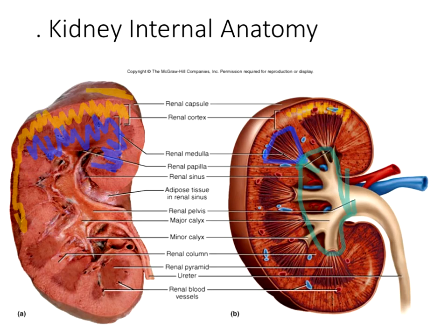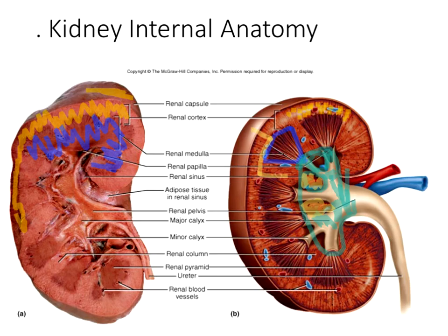Minor calyces sit at one pyramid; majors form where two or more minors come together. The renal sinuses contain a large deposit of fat wrapped around vessels. The renal arteries branch into segmental, then interlobar, then arcuate, then cortical radial arteries supplying the kidney.